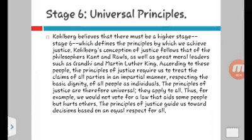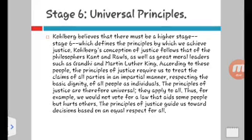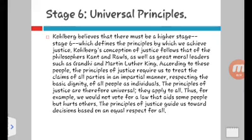The last stage and the last level — post-conventional — Kohlberg believes there must be a higher stage, which is stage six, to define the principles by which we achieve justice. His concept of justice follows that of philosophers as well as figures like Gandhi and Martin Luther King. According to these people, the principles of justice require us to treat the claims of all parties in an impartial, fair manner, respecting the basic dignity of all people as individuals. Justice is universal — the principles of justice are universal and can be applied to all.